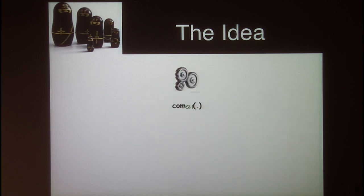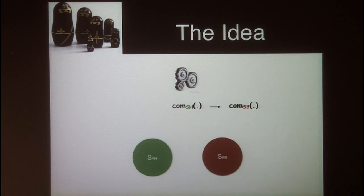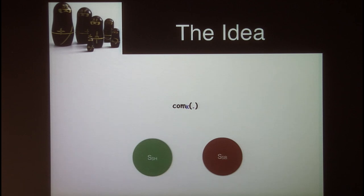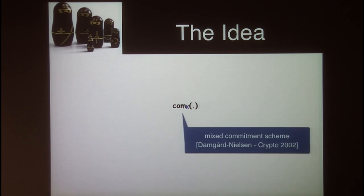To implement this idea, we consider two sets SSH and SSB, and have the commitment scheme parameterized by some value K from either of these sets. If K comes from SSH, the commitment scheme is statistically hiding; if K comes from SSB, it is statistically binding. Such commitment schemes already exist in literature — they are called mixed commitment schemes, studied by Damgård and Nielsen at Crypto 2002.